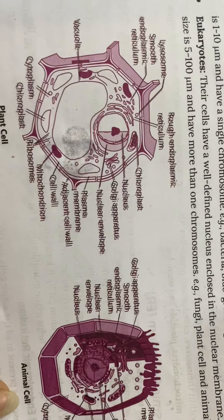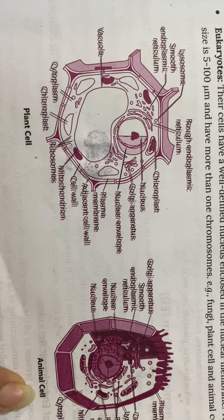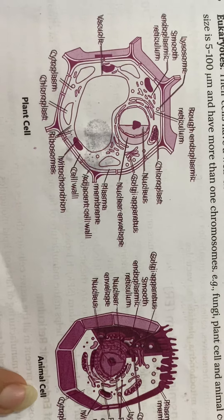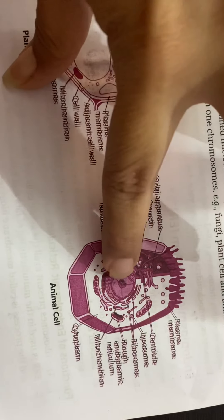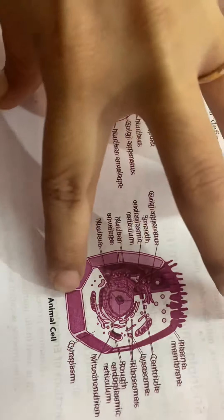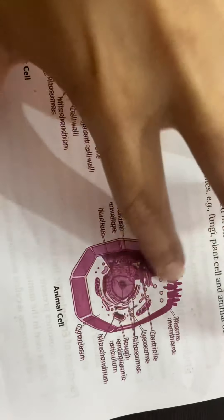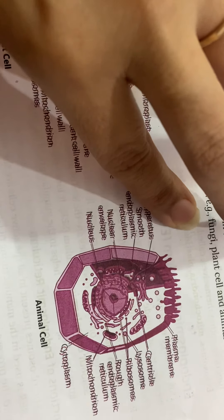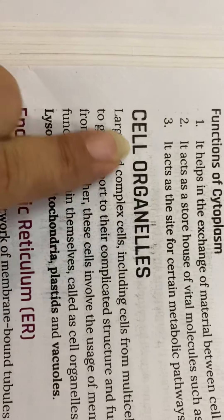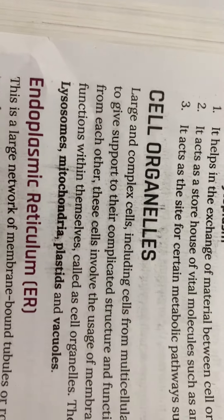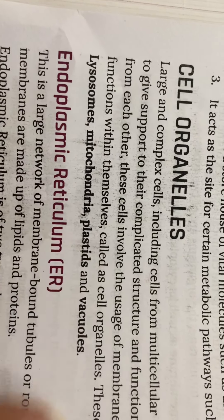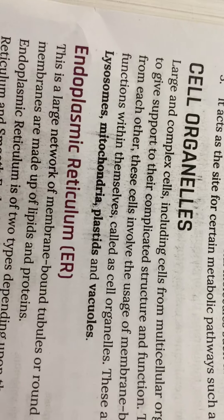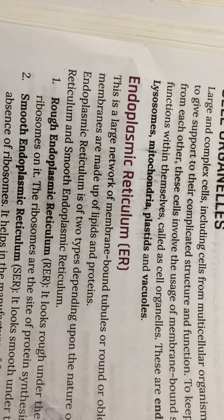Today I am going to tell you about the cell organelles. What are the cell organelles? This is the main structure of your animal cell. In the animal cell, this is the nucleus, this is the cell membrane, and the rest of the portion is known as the cytoplasm. This cytoplasm contains many cell organelles, such as lysosomes, mitochondria, plastids, and vacuoles.